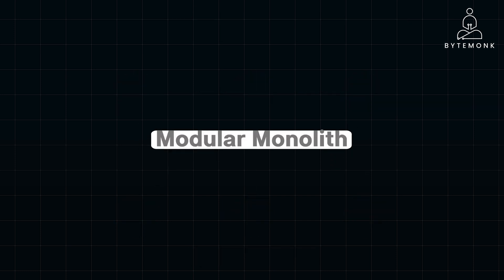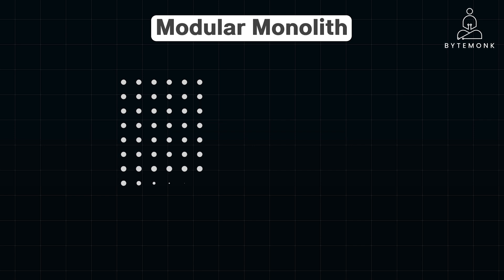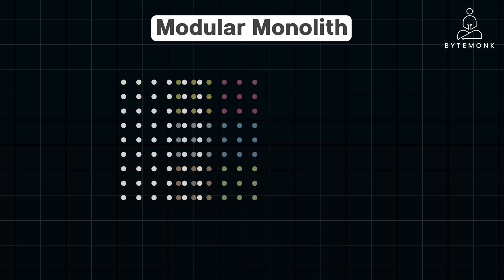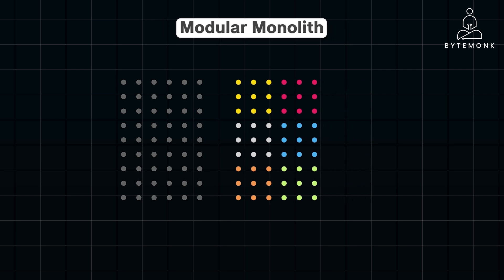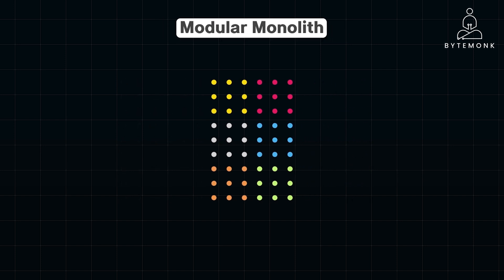Modular monolith emerged as a way to address the limitations of traditional monolithic architectures while avoiding some of the complexities introduced by SOA. With its single deployment unit and in-process communication, the modular monolith offered a simpler operational model, eliminating the network overhead present in SOA.